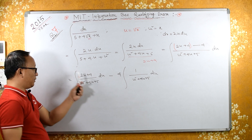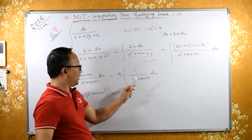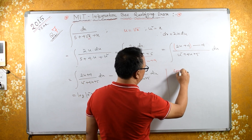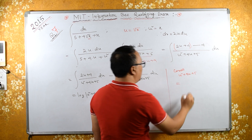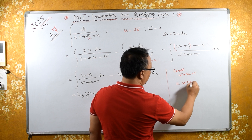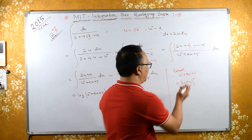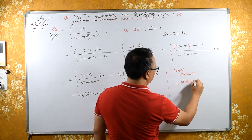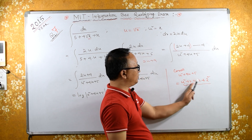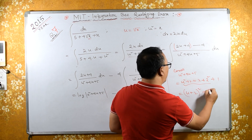The first integral gives log of (u squared plus 4u plus 5). For the second part, let's complete the square on u squared plus 4u plus 5. Using the formula (u plus 2) whole square equals u squared plus 2 times u times 2 plus 4, we get u squared plus 4u plus 4 plus 1, which equals (u plus 2) squared plus 1 squared.